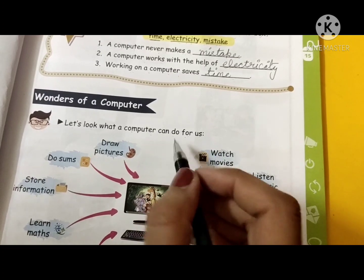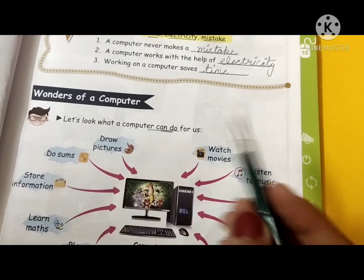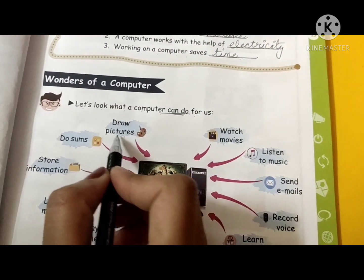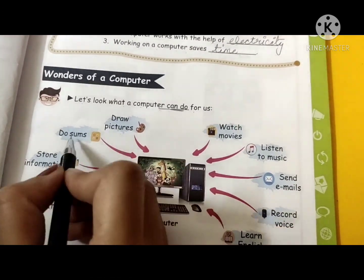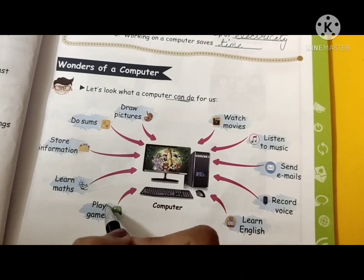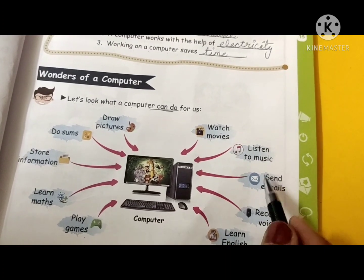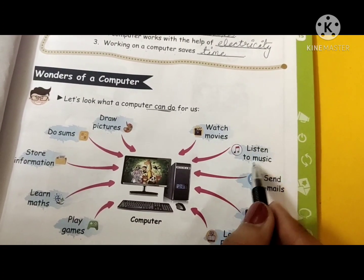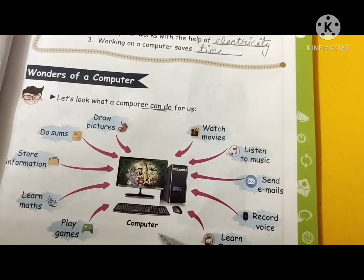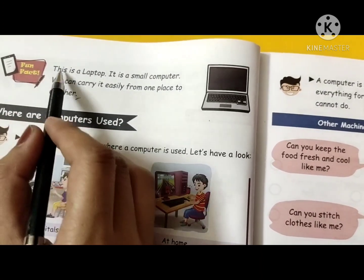Let's look at what a computer can do for us. A computer can draw pictures, store information, help learn maths, play games, help learn English, record voice, send emails, listen to music, and watch movies. These are the things we can do with the help of a computer.